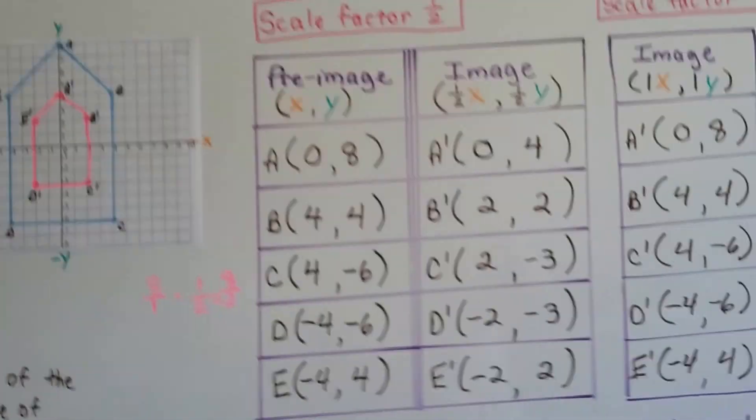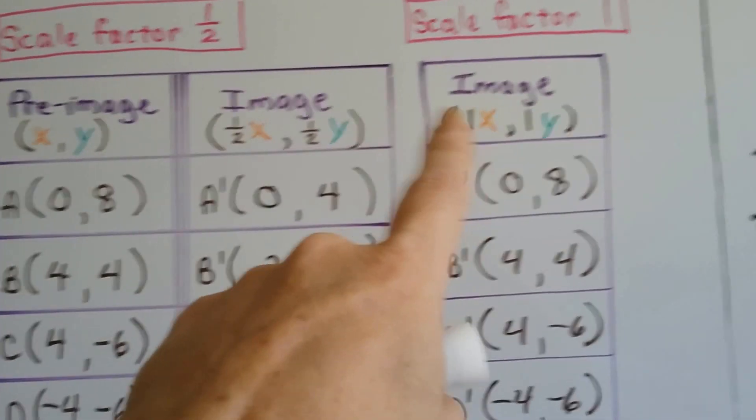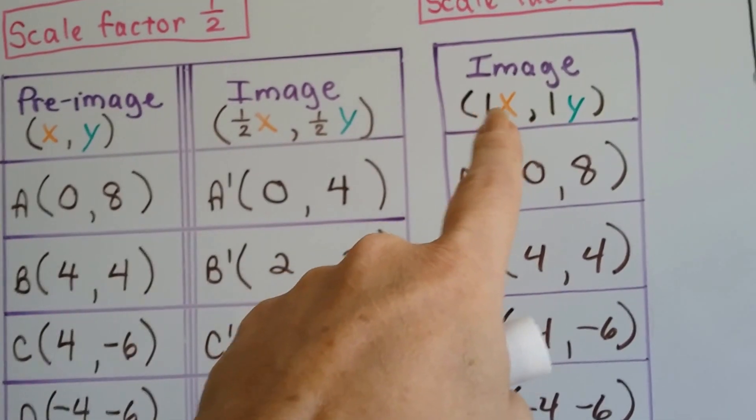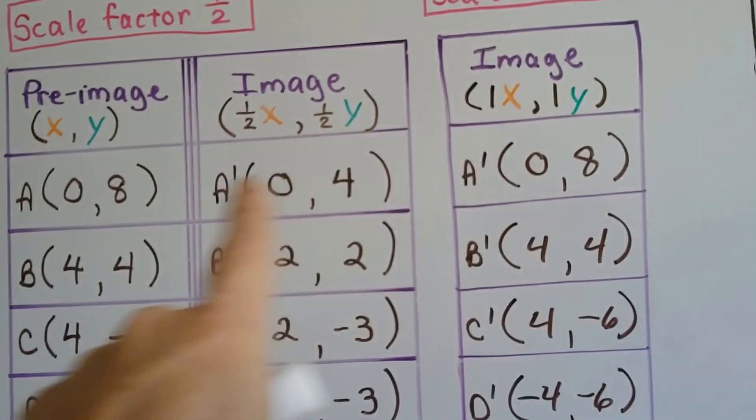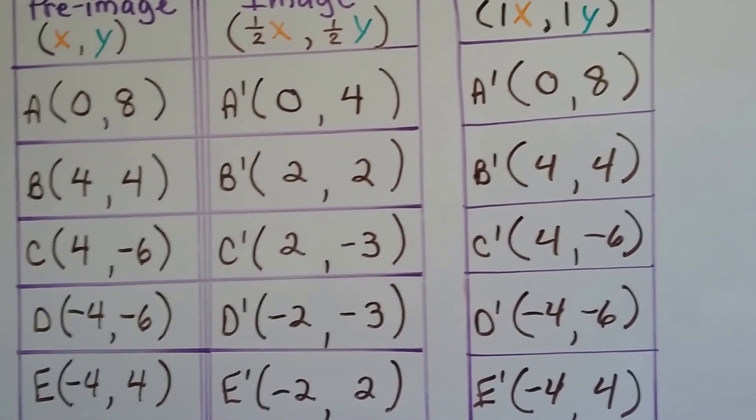Now what would have happened if our scale factor was 1 and not a half? What if it was 1? Well, remember, the way to figure it out is you multiply it by that number. So that means X would be multiplied by 1. That's 0. Y would be multiplied by 1. That's an 8. Well, if we multiplied all these by 1, they'd stay the same, wouldn't they?